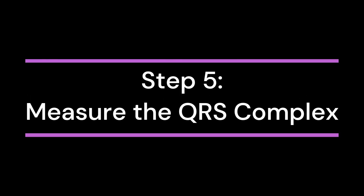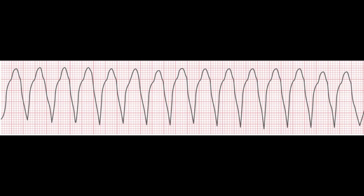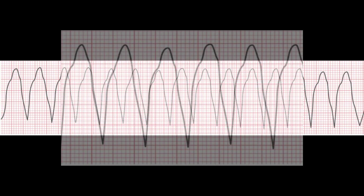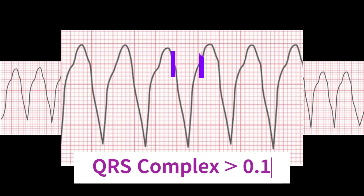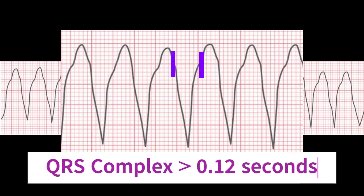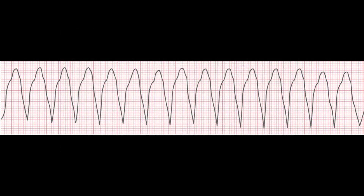Step 5: Measure the QRS complex. In VTAC, the QRS complex is wide and bizarre, typically greater than 0.12 seconds, and it has a consistent morphology. The wide QRS complex is due to the abnormal ventricular activation sequence that occurs during VT.